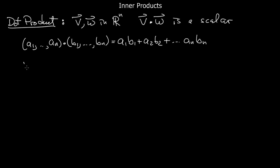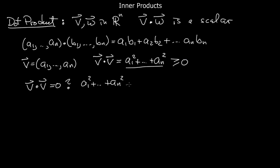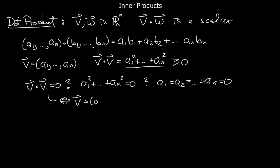What properties does this satisfy? Well, if v is a1 through an, notice that v dot v is a1 squared up to an squared. These are a bunch of real numbers, and their squares make them greater than or equal to zero. So the dot product of a vector with itself is greater than or equal to zero. And when can it be equal to zero? Only if the sum of all these non-negative numbers is zero, meaning they all have to equal zero. So the only way a vector can have a dot product with itself being zero is if the vector is actually zero.